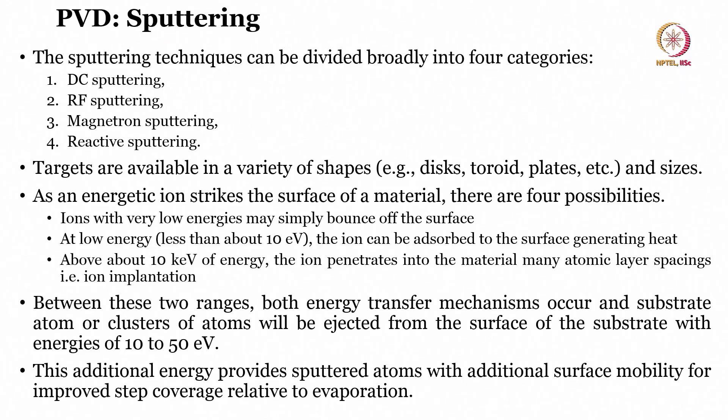When we want to deposit a metal onto a substrate and pattern it to get different electrode shapes for fabricating a device, we need to understand PVD techniques. Within PVD, sputtering is divided into four broad categories: DC sputtering, radio frequency sputtering, magnetron sputtering, and reactive ion sputtering.